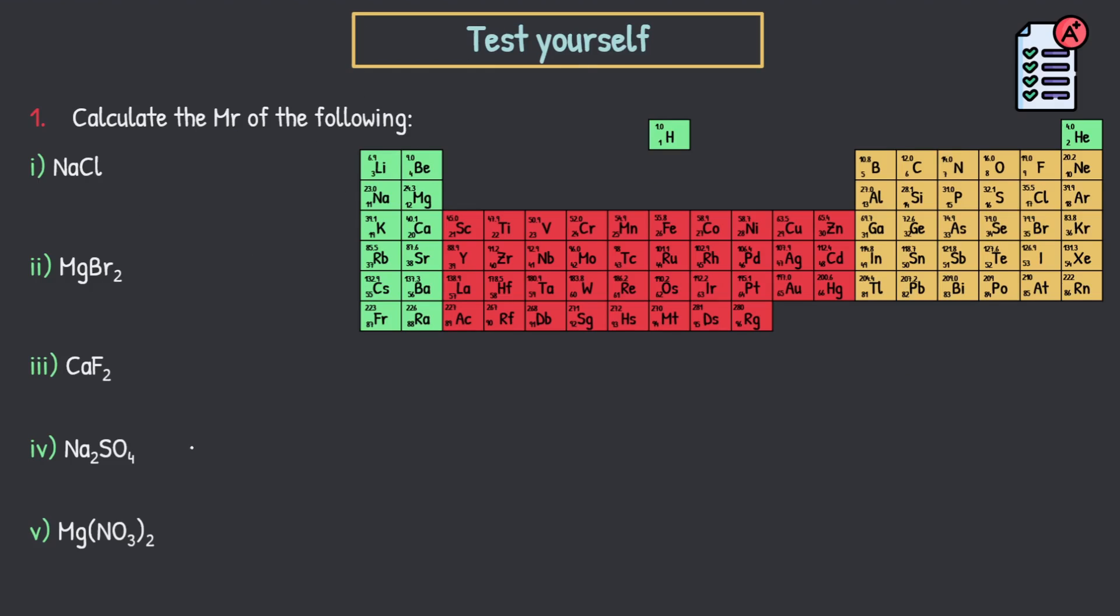Alright, test yourself questions, guys. Just a few practice problems, get the juices flowing. So this is essentially real basic stuff. You should have been able to do this at GCSE. But if not, all good. We're here to save the day. So calculate the Mr of the following. What is Mr? Relative molecular mass or relative formula mass. So for example, this one's ionic, so it would be formula mass. So what you want to do here is pause video and attempt these yourself. The periodic table is right here. See if you can do it.